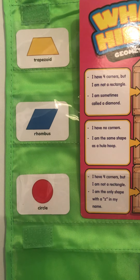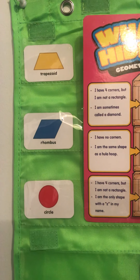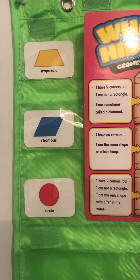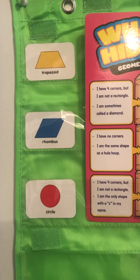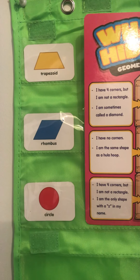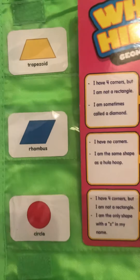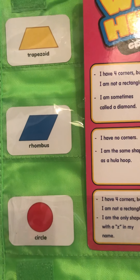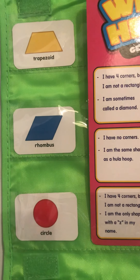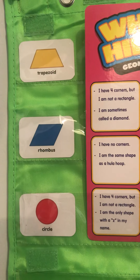The next one: I have four corners but I am not a rectangle. I am the only flat shape with a Z in my name. I have four corners, I'm not a rectangle, and I have a Z in my name. What is it? It's a trapezoid!